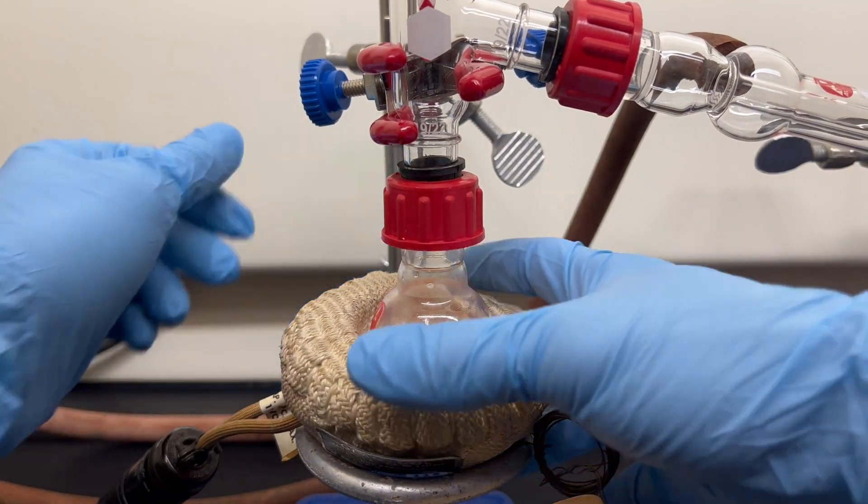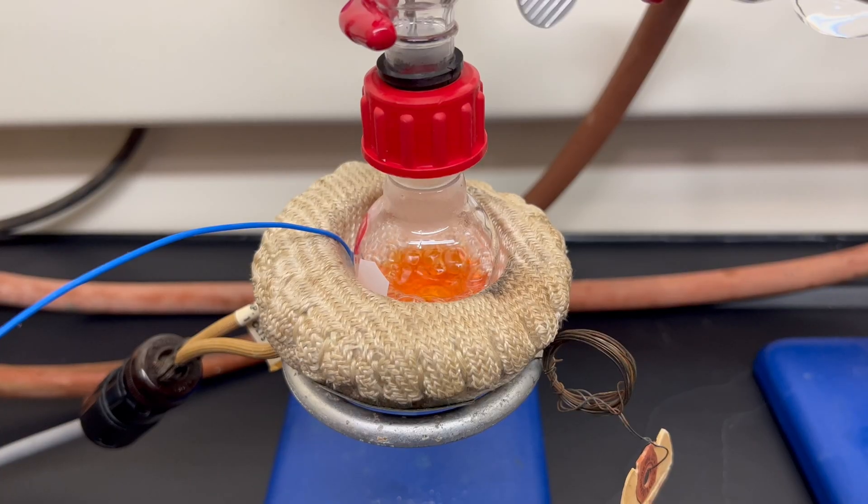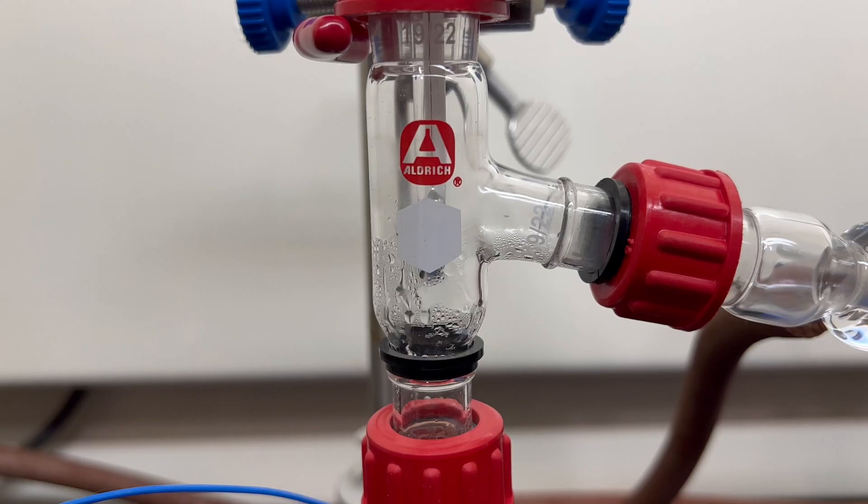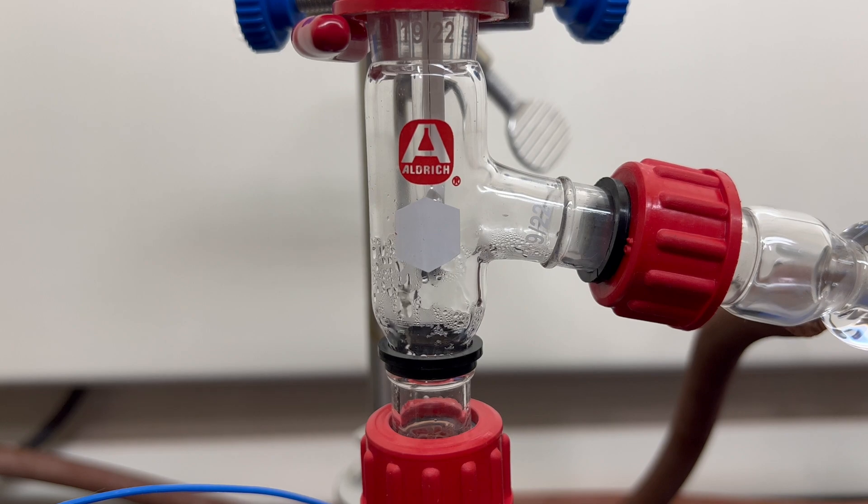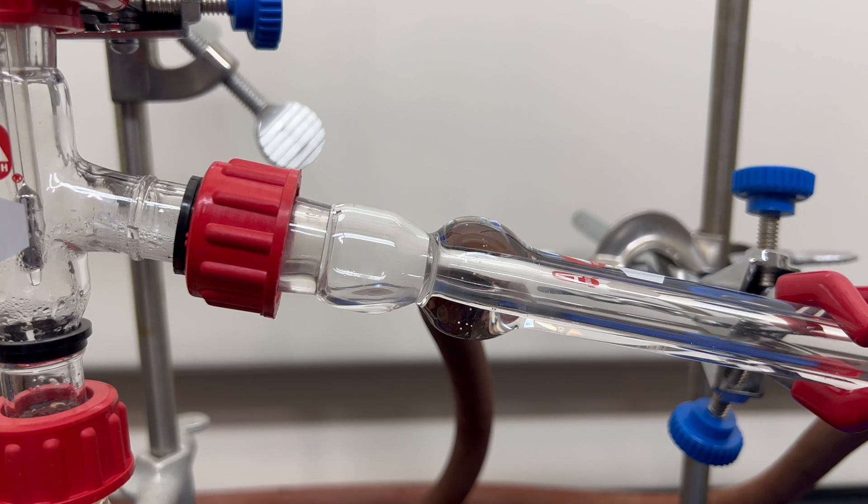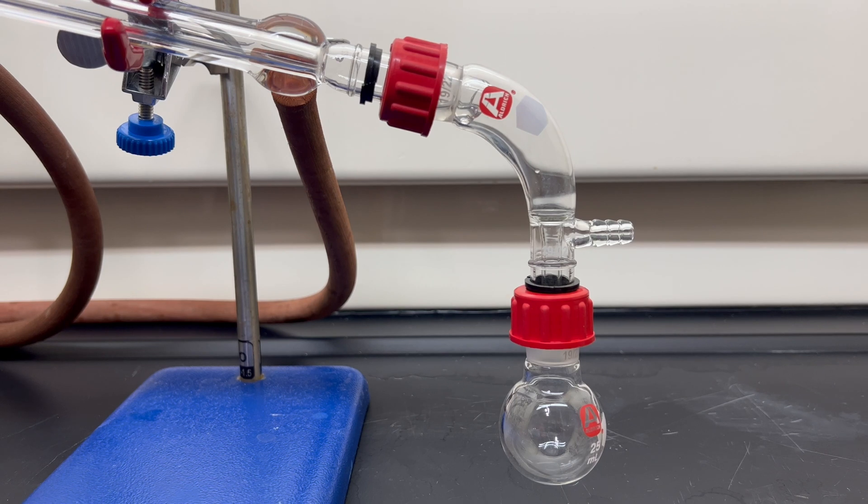Loading a flask with the crude, we can start a distillation. Only product that comes over at 80 degrees Celsius is kept. Anything outside that temperature will be impurities from the crude. High temperature reactions such as decarboxylation are known for producing many byproducts, hence why the cleanup steps are needed.